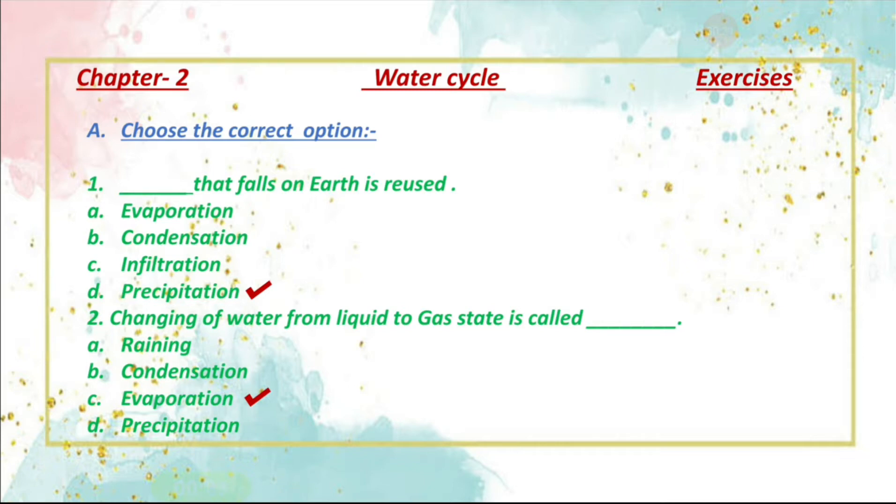First, dash that falls on earth is reused. Here 4 options are given and you have to select the correct option and mark tick in front of it. I have already solved this. So let's do 2. Options are A. Evaporation, B. Condensation, C. Infiltration and D. Precipitation. So correct option is precipitation and you have to mark tick in front of it.